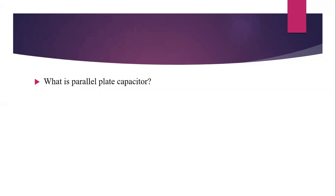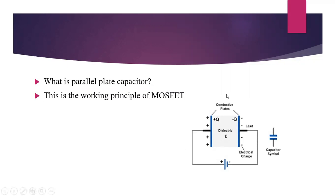The working principle of MOSFET involves two concepts: the parallel plate capacitor and the threshold voltage. Considering a parallel plate capacitor — two conductive plates separated by a distance d, with that space filled with a dielectric material. If positive charge is given to one conductive plate, an equivalent negative charge is developed on the opposite side of the other conductive plate. This is the parallel plate capacitor concept and is the main working principle of MOSFET.